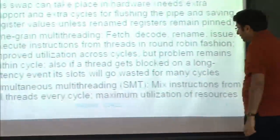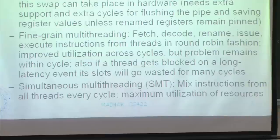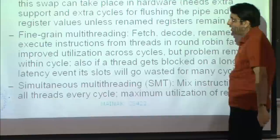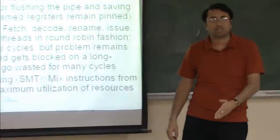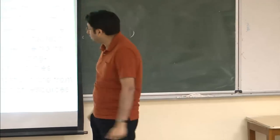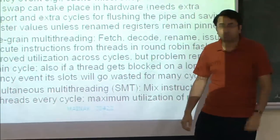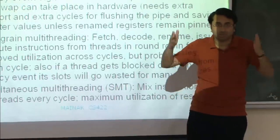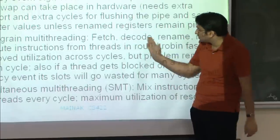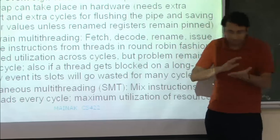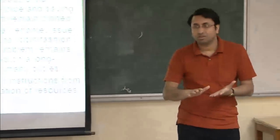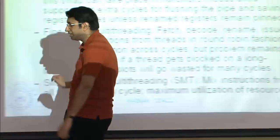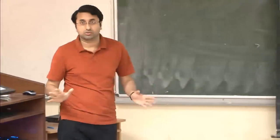The third solution is simultaneous multi-threading. Here you mix instructions from all threads every cycle. You first fetch from thread one — if you can only fetch two instructions because the third is a branch, you'll fetch one instruction from thread two, and one more from thread three to fill up the fetch packet. Every cycle, in every stage, you try to fill up your resources as much as possible by mixing instructions from all threads. That gives you maximum utilization of resources, and in all these cases there is no context switch.